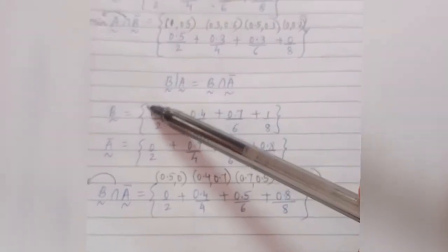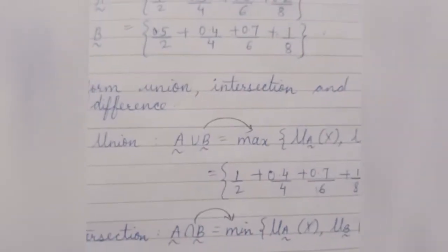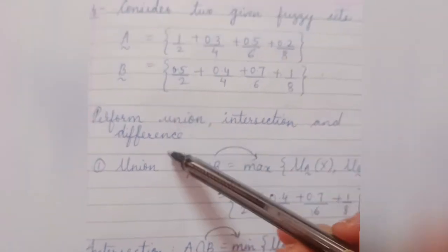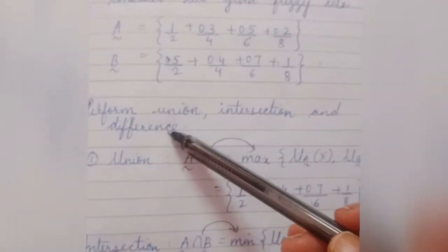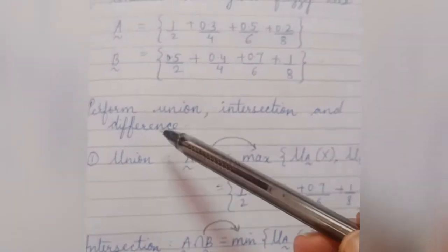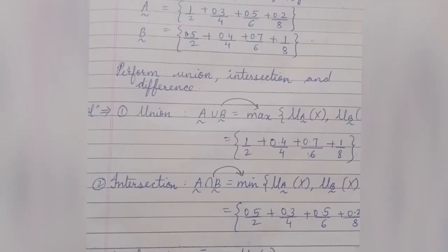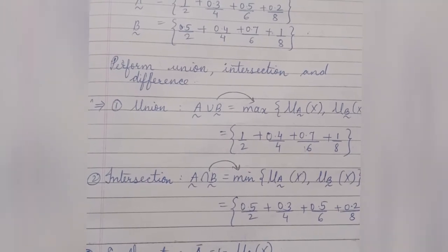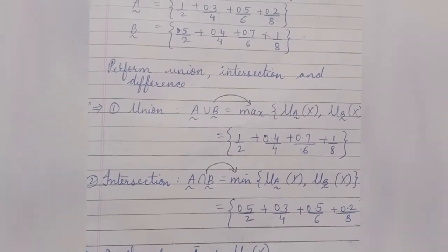In this way we can find B difference A. In this video we studied how to calculate union, intersection, and difference operations on fuzzy sets. Stay tuned for more updates — like, share, and subscribe to my channel. Thank you for watching.